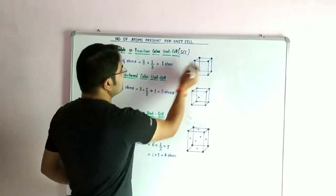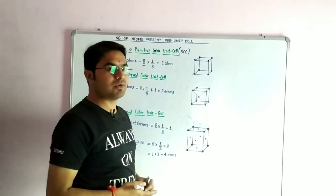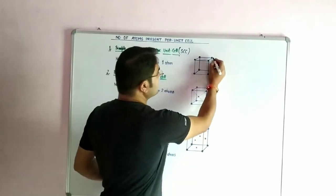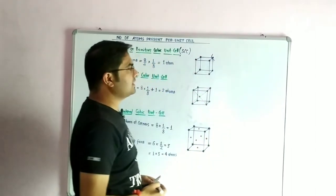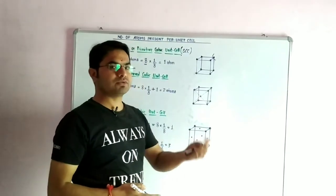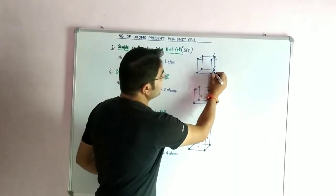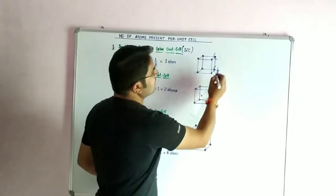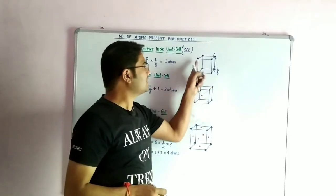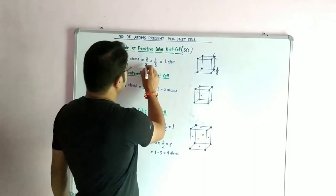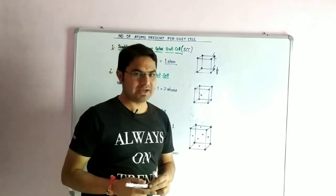There are eight corners. We write the representation of eight corners. If we talk about contribution — if you have one atom present at a corner, how much does it contribute to the whole cube? We say that one-eighth part of the whole cube is occupied. So if there are eight atoms at corners, eight multiplied by one-eighth equals one atom. So in simple cubic, one atom per unit cell.